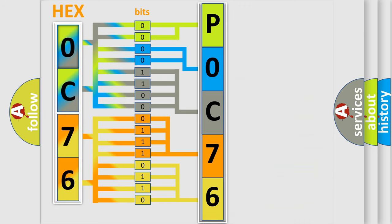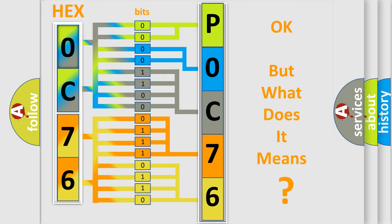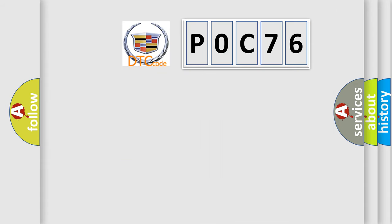We now know in what way the diagnostic tool translates the received information into a more comprehensible format. The number itself does not make sense to us if we cannot assign information about what it actually expresses. So, what does the diagnostic trouble code P0C76 interpret specifically for Cadillac car manufacturers?